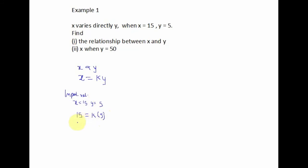This gives us 15 is equal to 5k. We divide both sides by 5, so we have k is equal to 15 over 5, and that gives us k is equal to 3.